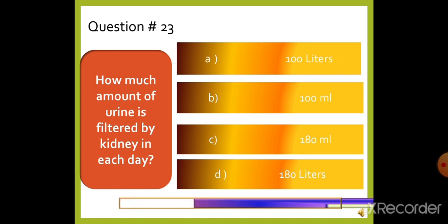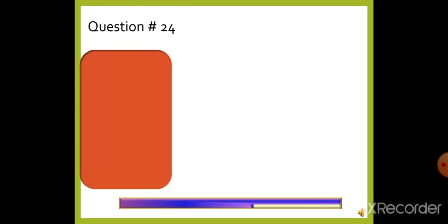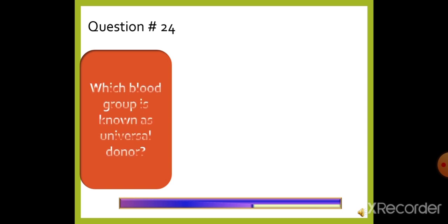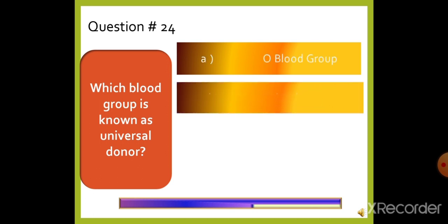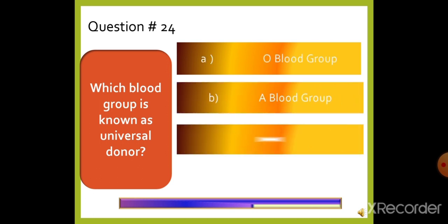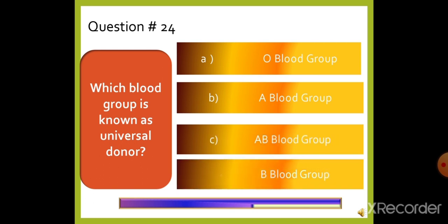Question 24: Which blood group is known as the universal donor? — option A: O blood group, option B: A blood group, option C: AB blood group, or option D: B blood group. Blood group O is known as the universal donor. Option A is the right answer.